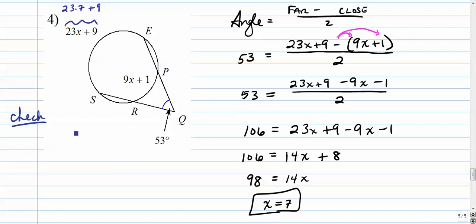So, that whole arc SE is 170. So, the angle should be the faraway arc minus the close arc. The close arc is 9 times 7 plus 1, 64 over 2. 170 minus 64. That's pretty easy. That's 106. So, 53 should equal 106 over 2. And it does.